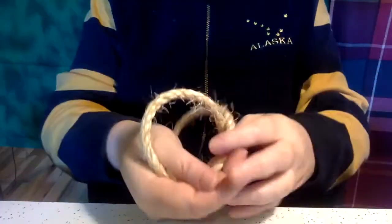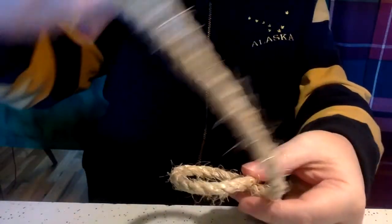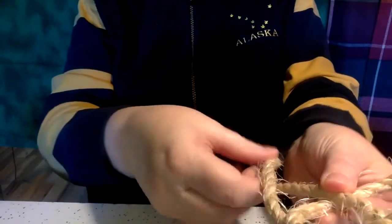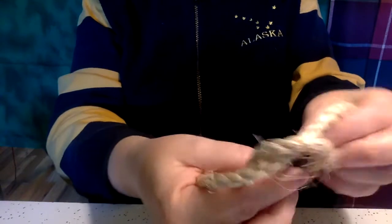Okay, this is the bowline. You simply make a loop. Bring the tail up, around, and back through.